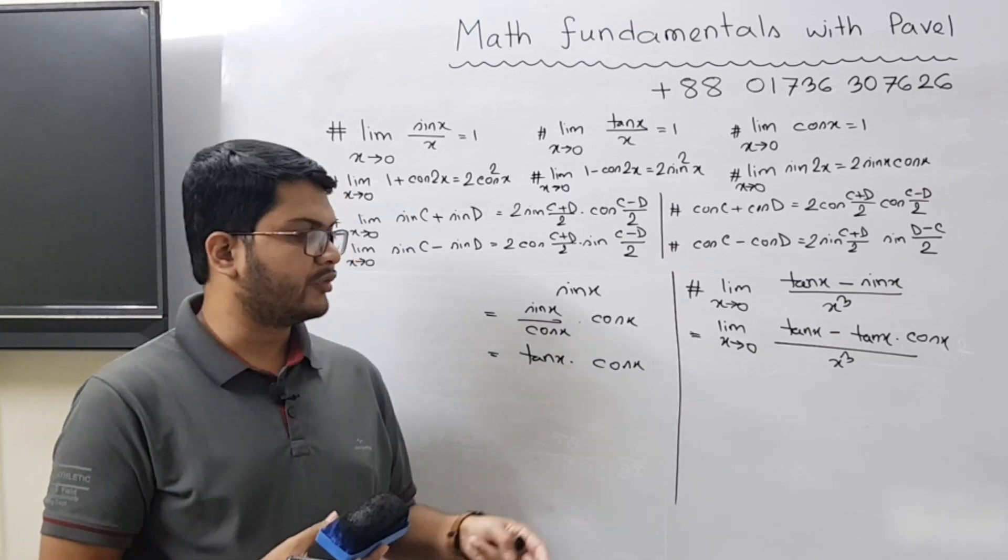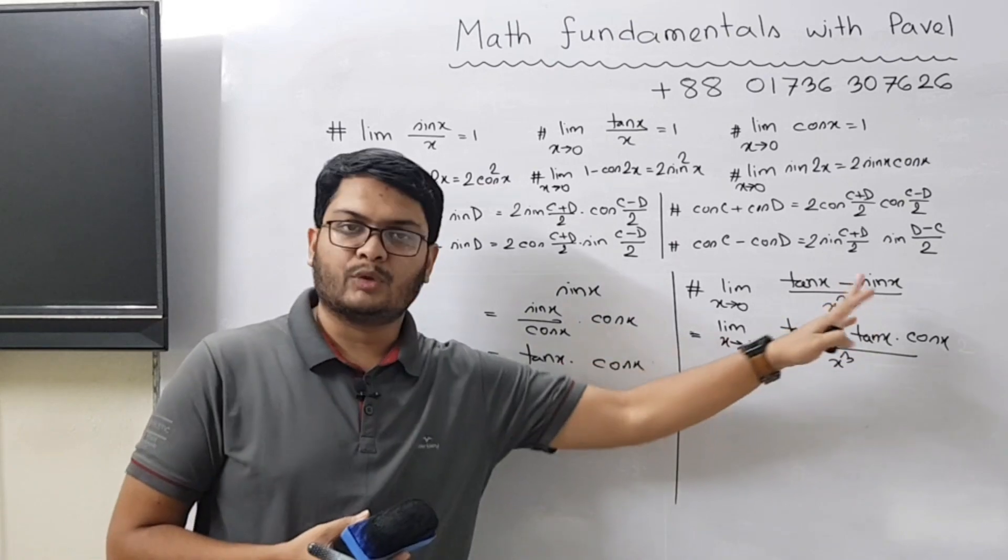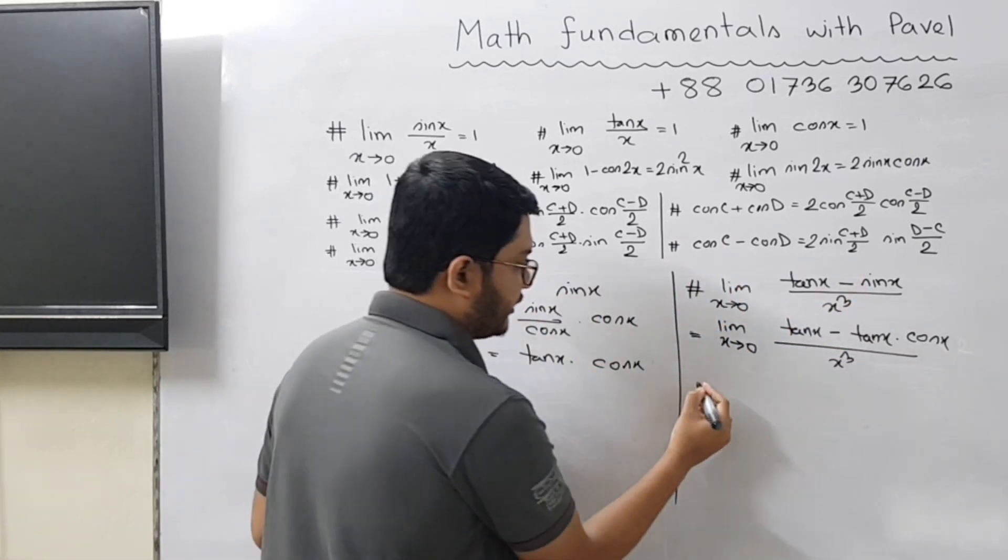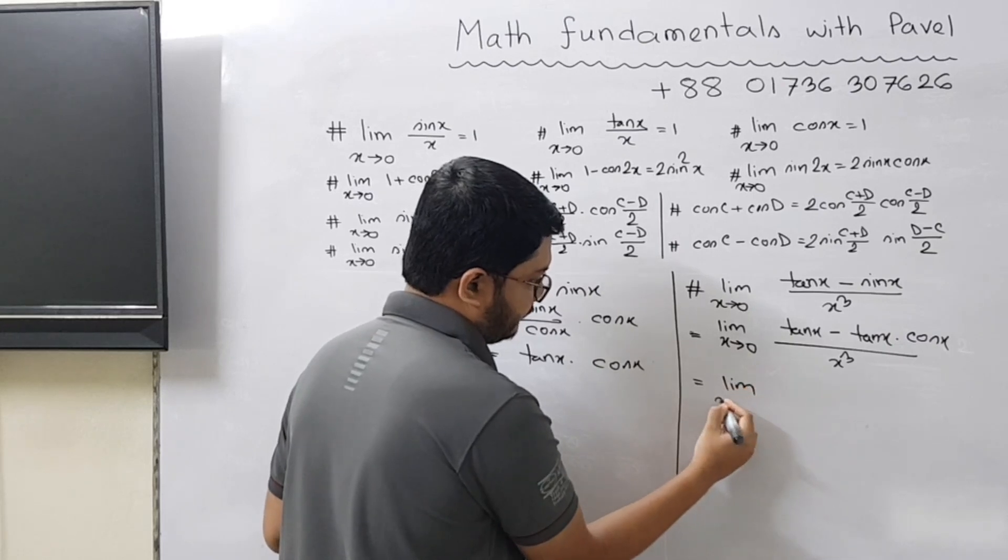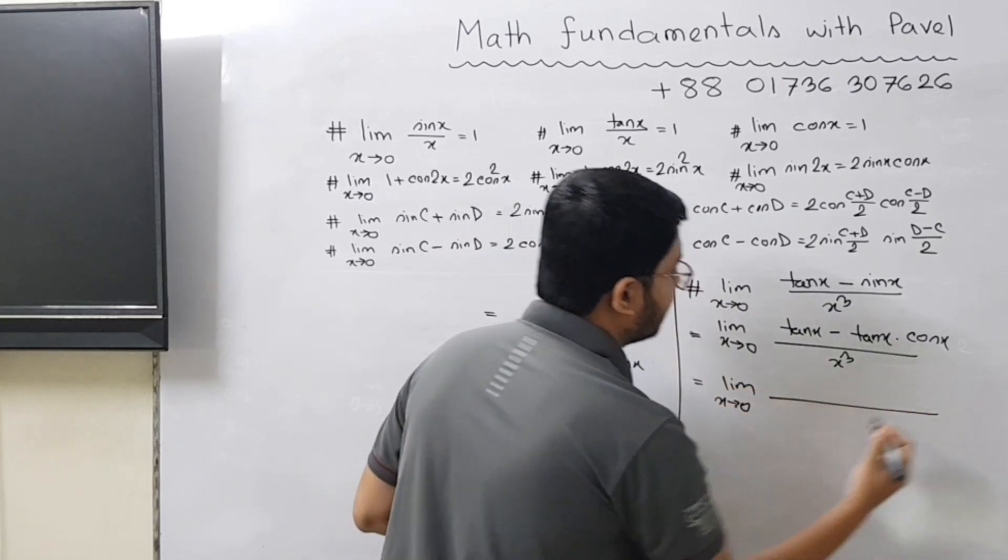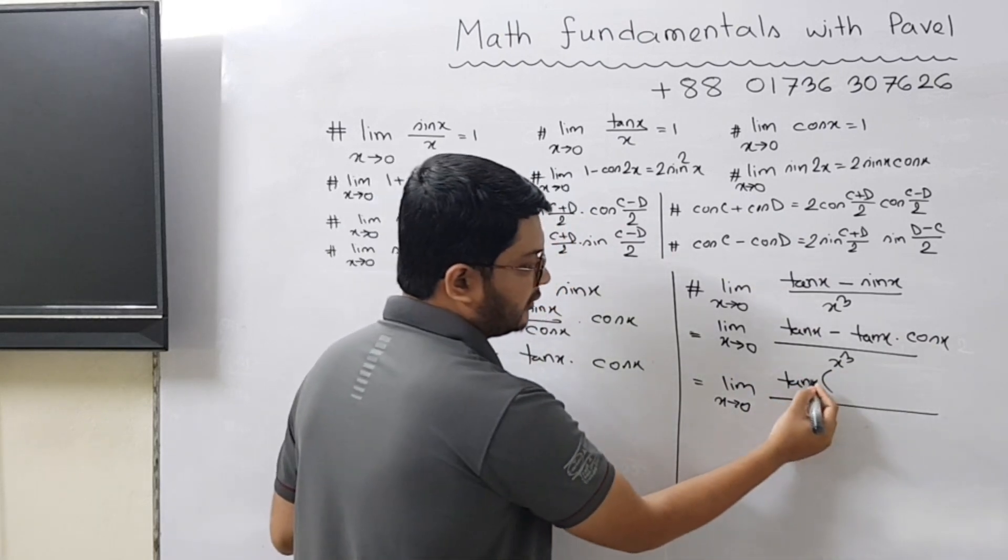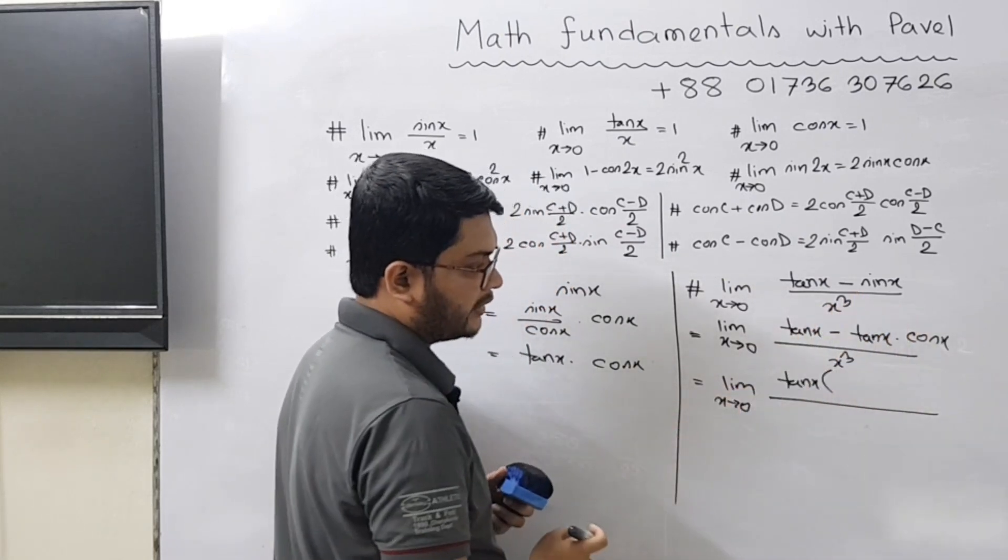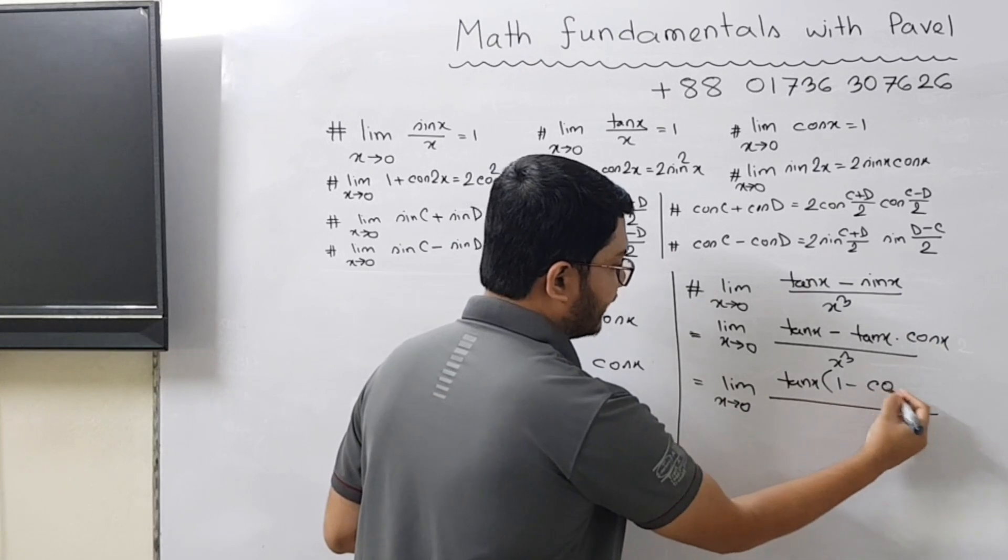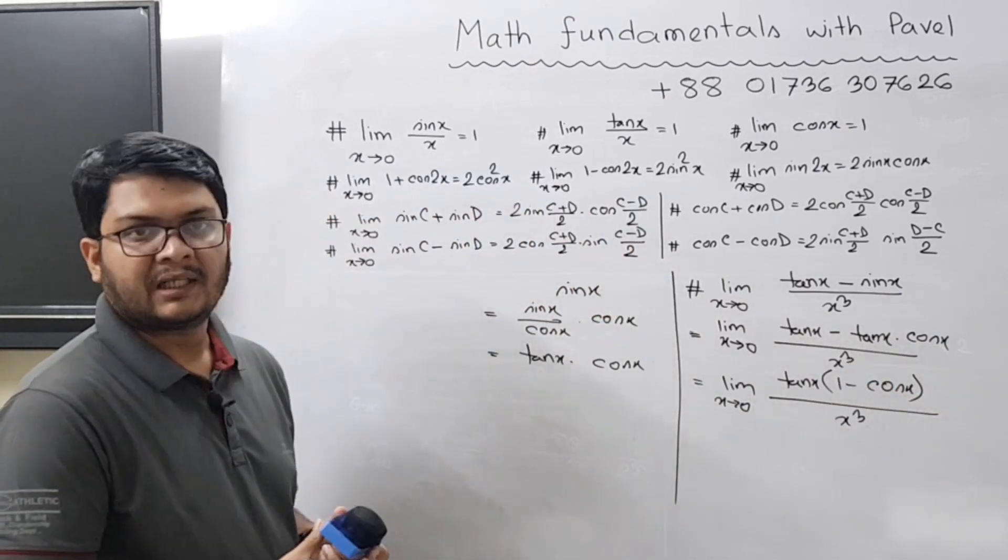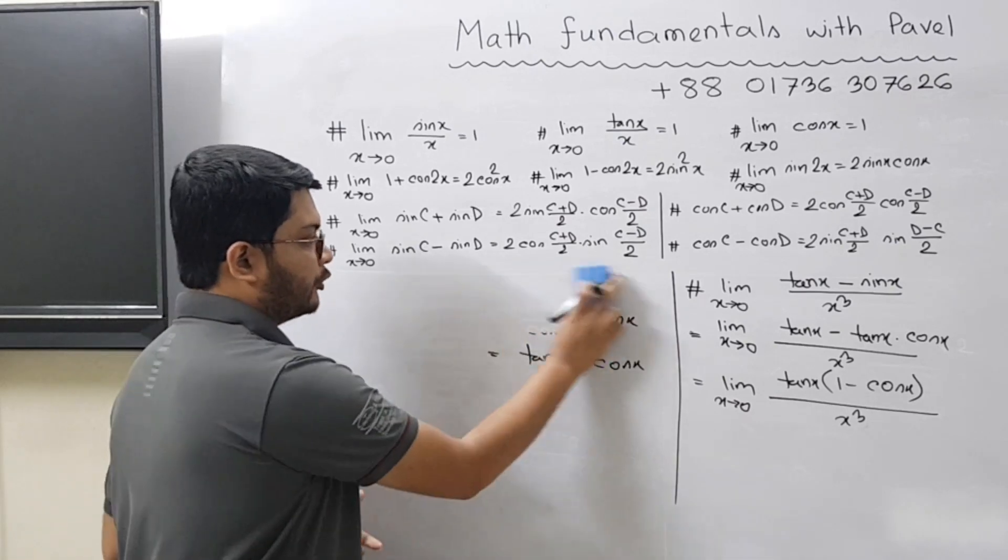So if you take tan x as common, or divide both these terms with tan x, you get 1 minus cos x divided by x³. I hope you can understand up to this part.